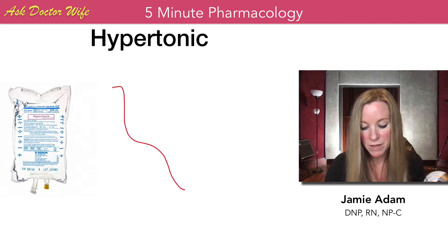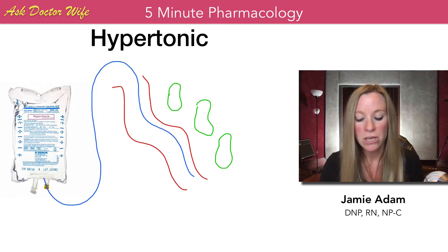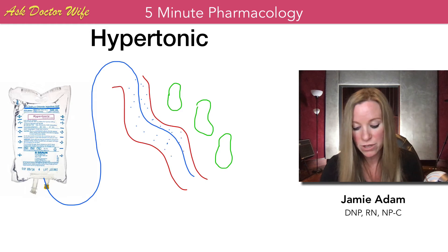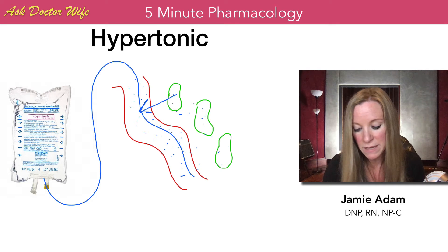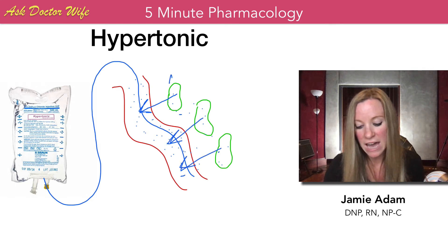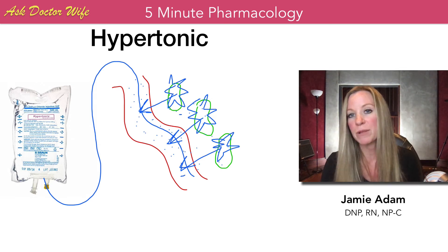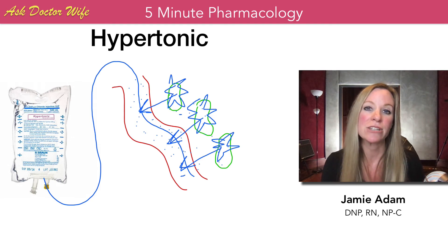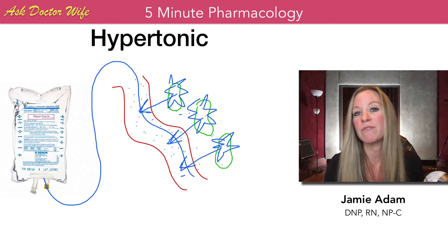Now let's look at a hypertonic solution. If this is the blood vessel and these are the cells, infusing a hypertonic solution into the bloodstream means it has a greater number of solutes than what we find in the cells. There's going to be a shift of water out of the cells into the extracellular spaces and into the bloodstream, causing those cells to shrink in size. We may also give a hypertonic solution if a patient has hyponatremia, to raise the level of sodium in their bloodstream.